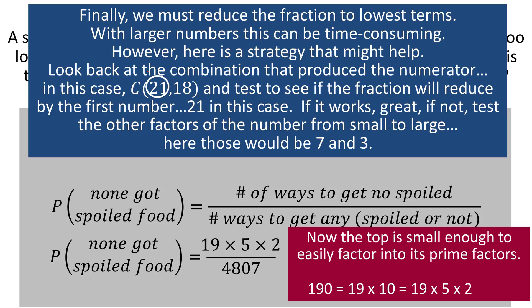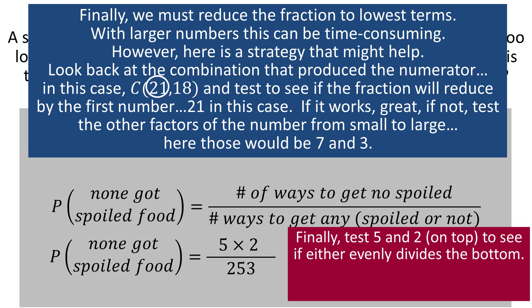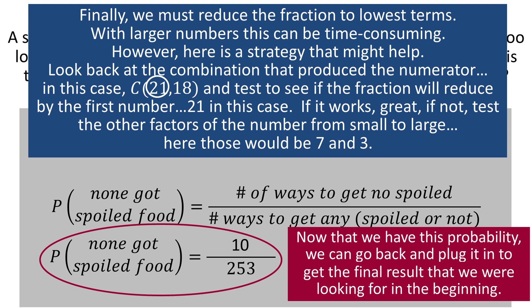So whether or not this fraction reduces now depends on whether 19 goes evenly into 4807, or 5 goes evenly into 4807, or 2 goes evenly into 4807. Now 4807 is not an even number, so I know it's not going to go evenly by 2. It doesn't end in a 0 or 5, so it's not going to divide by 5. You can try this if you don't believe me. So the only hope for this reducing is that if 19 goes evenly into 4807, so let's try that. It does. It happens to go in there 253 times. So what I know now is that 4807 is 19 times 253, and since I have a common factor between top and bottom, I can divide that out, and I end up with 5 times 2 over 253. And as I've already said, 5 does not divide into that, and 2 does not divide into that, so I'm done. 5 times 2 is 10. And the probability that none got spoiled food is 10 over 253.